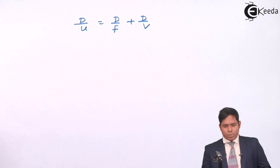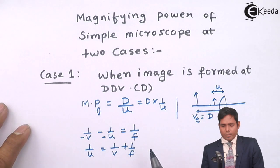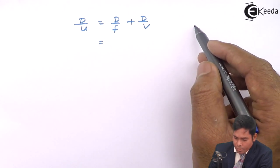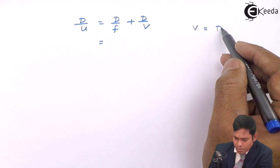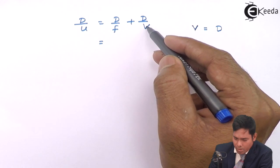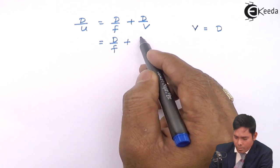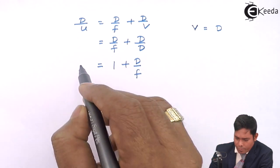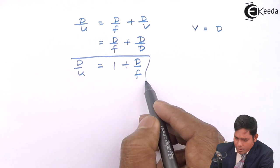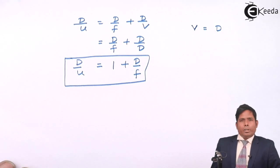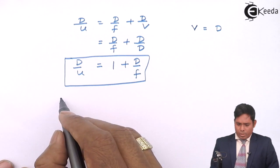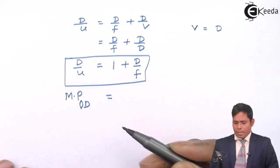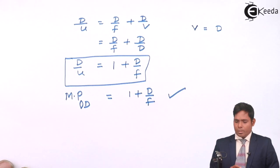Now, as we discussed, if the image is formed at DDV, the image distance v equals D. So substituting v = D, the term D/v becomes D/D which equals 1. Therefore, the magnifying power of a simple microscope when the image is formed at the distance of distinct vision is given by: M = 1 + D/f. That is the formula.